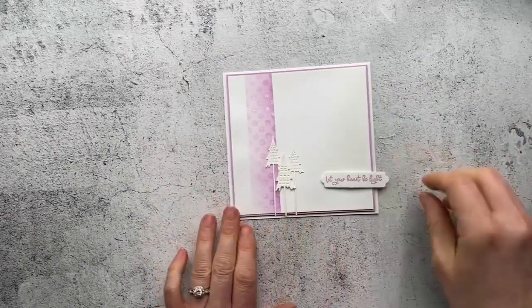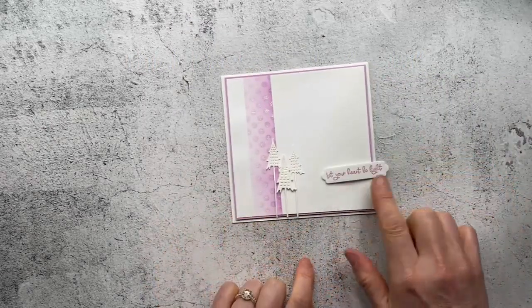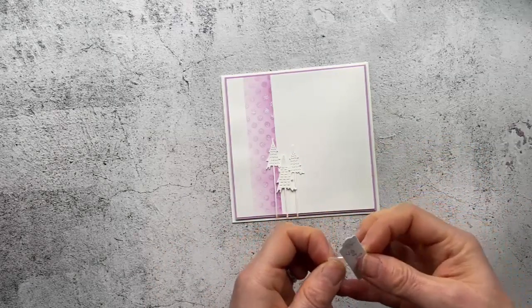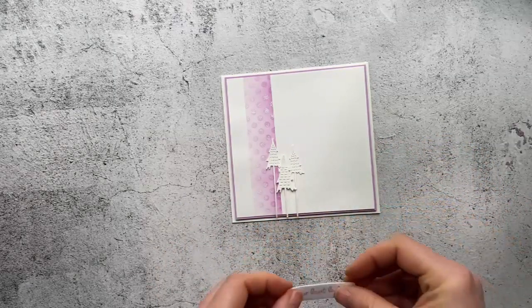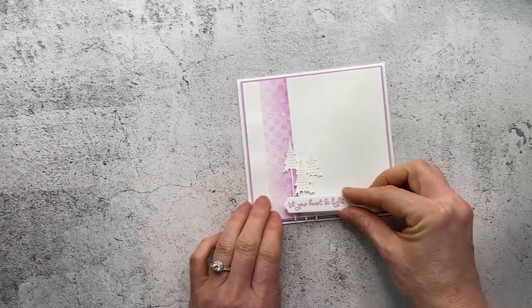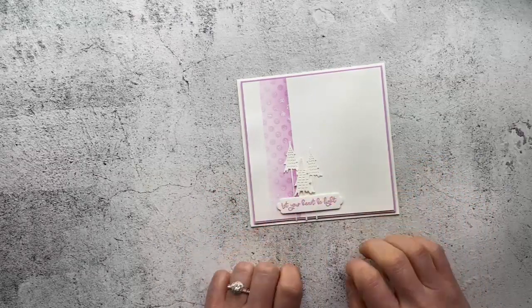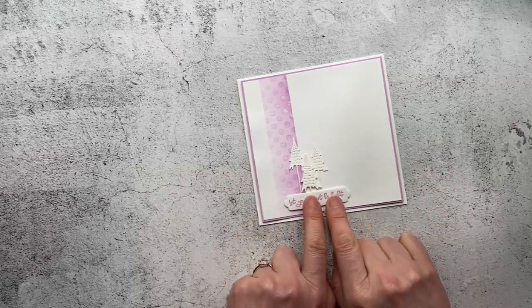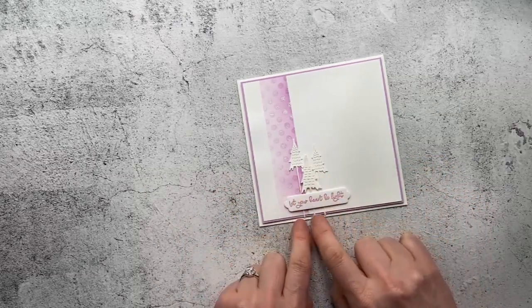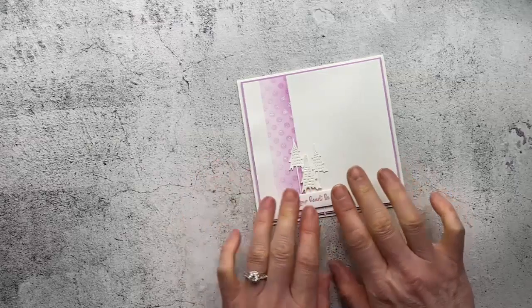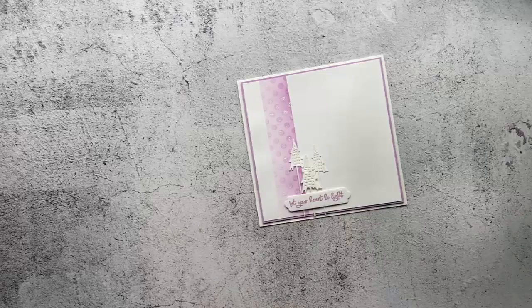In this stamp set they have these lovely words and this one says let your heart beat light which I thought was quite nice for a Christmas card just something a little bit different. I've cut that out with the Christmas labels dies and stamped it in fresh freesia and then we're just going to put that underneath centered underneath the trees with dimensionals. This is holding down our tree stems so that's why I didn't bother with sticking them down earlier.